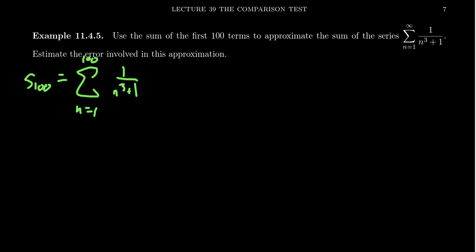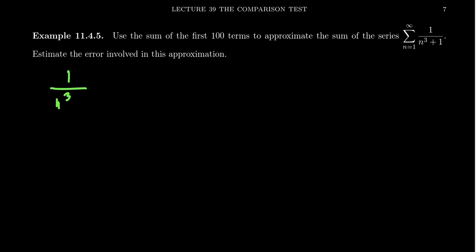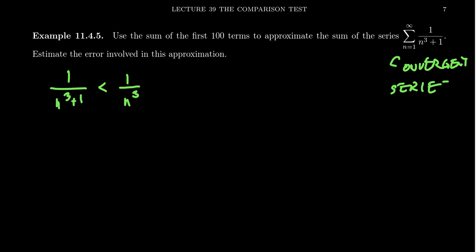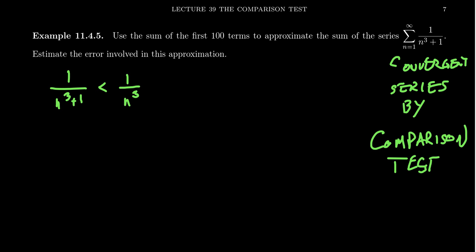We can throw this into a computer and get a calculation. We actually want to figure out the error of this — how accurate is s sub 100? Now, 1 over n cubed plus 1 is less than 1 over n cubed, because removing the 1 from the denominator makes the denominator smaller, making the fraction larger. So we know this series is convergent by the comparison test — the genuine comparison test, not the limit comparison test. This matters because the error bound transferring to the smaller series only works if we know the smaller series is actually term-by-term smaller. The series 1 over n cubed is a p-series with p equals 3, so it's convergent.